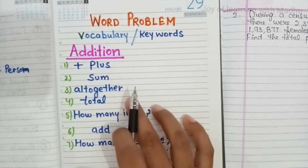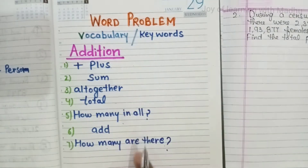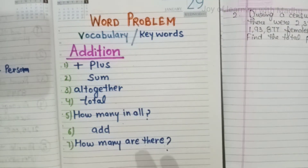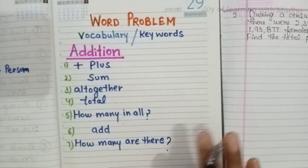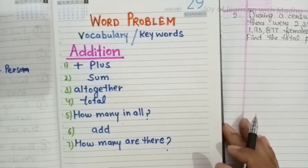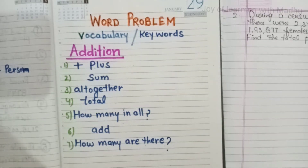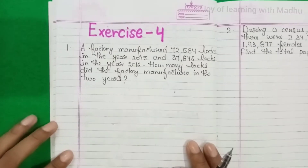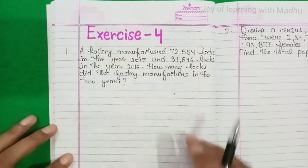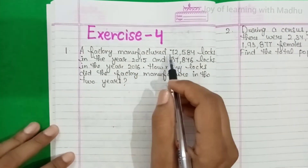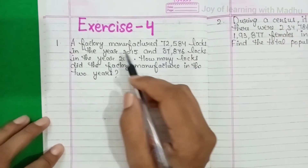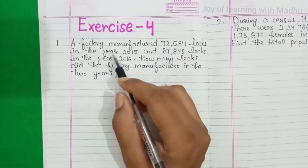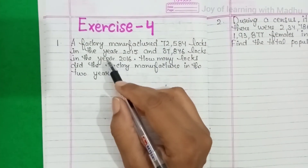So these are the keywords that you have learned for the word problem. Now come to exercise 4. There is question number 1.